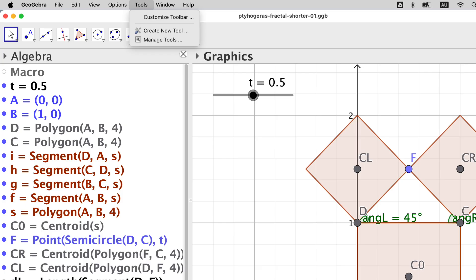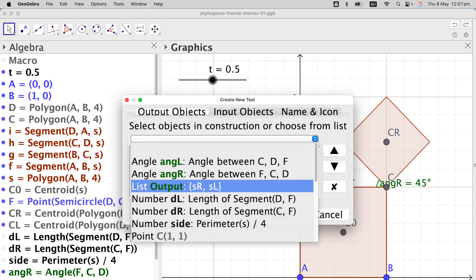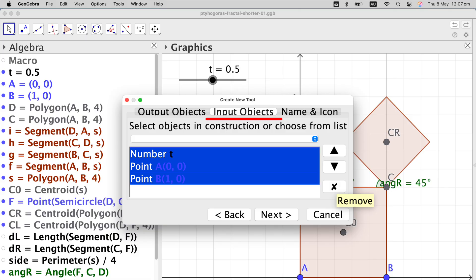The next step is to create a new tool in GeoGebra. We click on the Tools menu, select Create New Tool, in the pop-out window, in the Output Objects tab, we select only the list with the name Output.